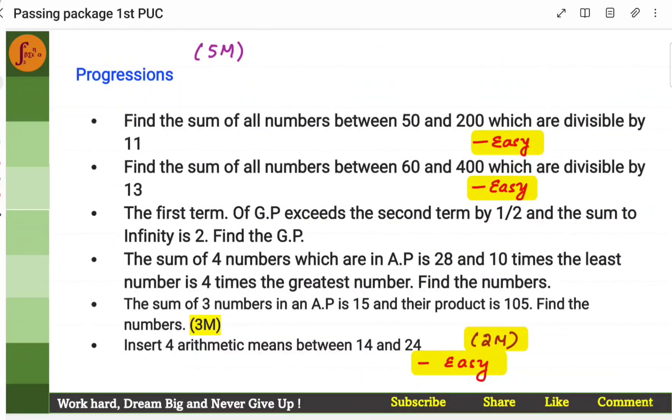Progressions. These are typical kind of problems we see in the previous question papers. We'll have to find the sum of all numbers between one number to another number, which are divisible by some number. These kind of problems. Then, you'll have to find AP. You'll have to find GP. Then, you'll have to insert or find 4 arithmetic means or geometric means. You'll have to insert geometric means between two numbers. And then, given numbers, you'll have to find AP and GP. So, these kind of problems, we will have to prepare.